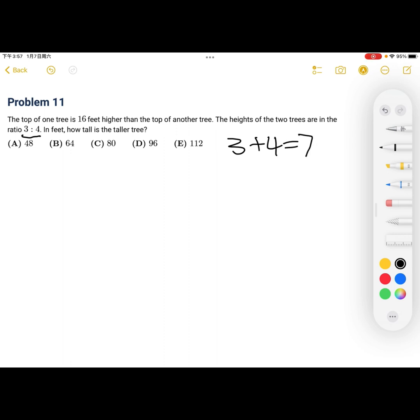7 is the total. So we have 3 sevenths. And then I'm going to say the total is x. So 3 sevenths x to 4 sevenths x.